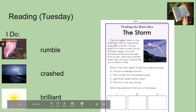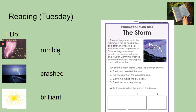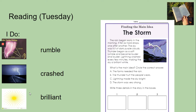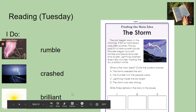We're going to learn some vocabulary before we actually read the story. The first word is rumble. Does anyone know what rumble means? What do you think rumble means? To make a noise — making a noise or a noise that you hear. The next word is crashed. What do you think the word crashed means? To make a loud noise. And brilliant — brilliant means bright.